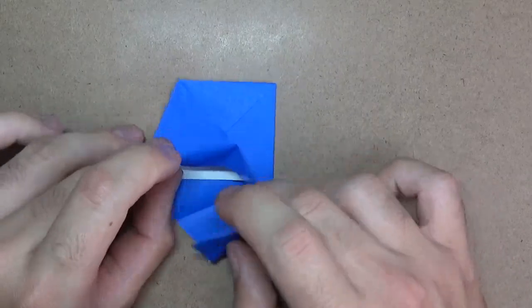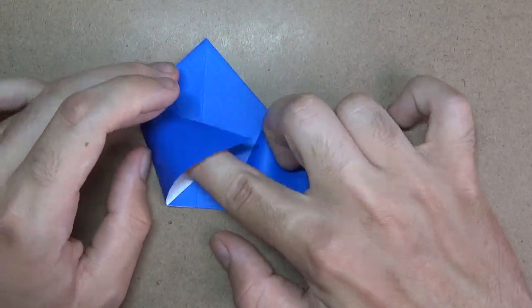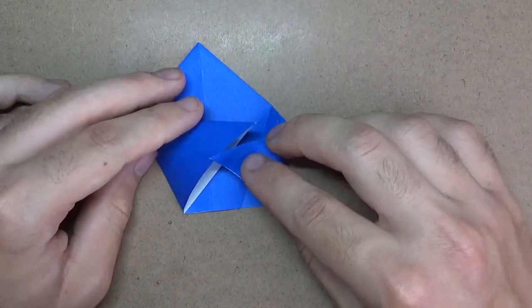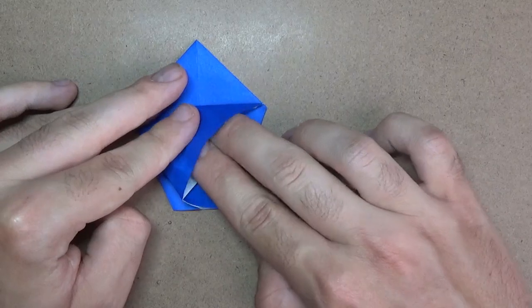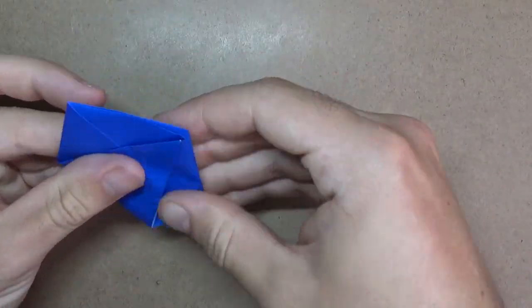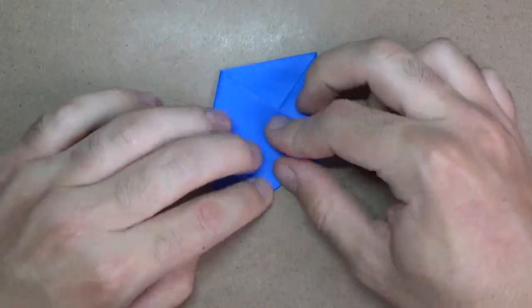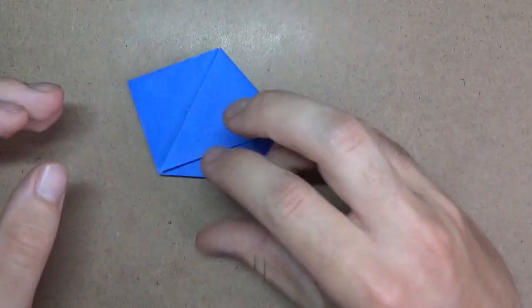All right. And now take this flap and stick it into the pocket. I don't think it matters which flap you stick inside of. Just stick one inside the other. Like that. All right. We're going to flatten everything.